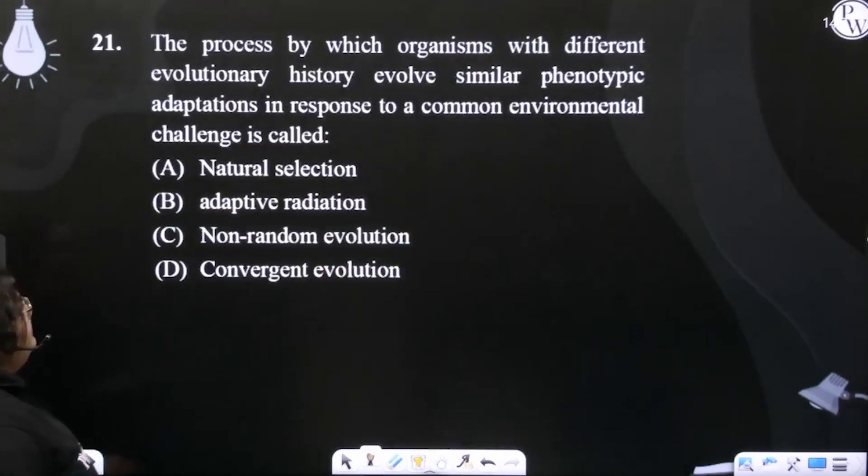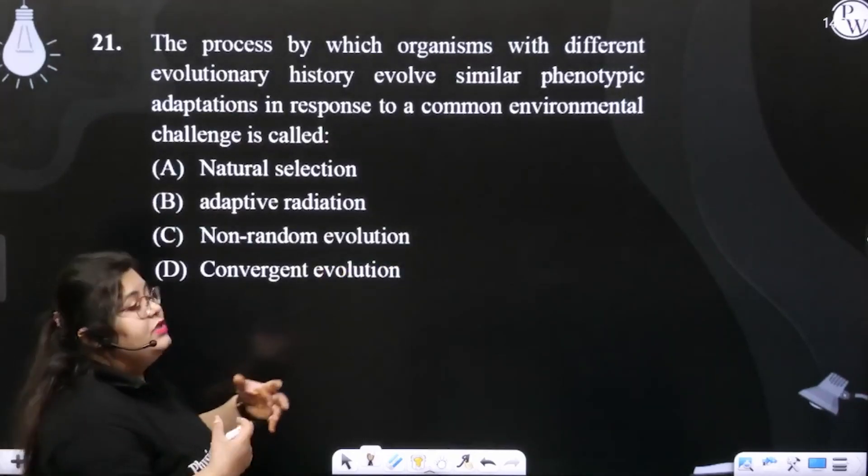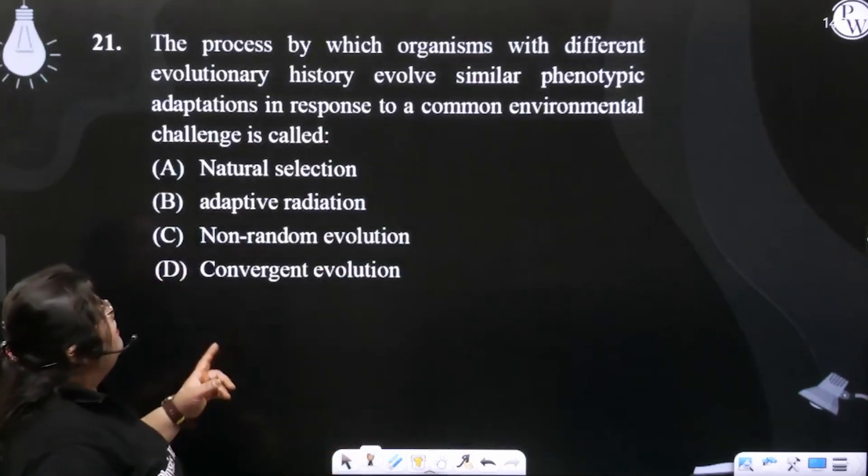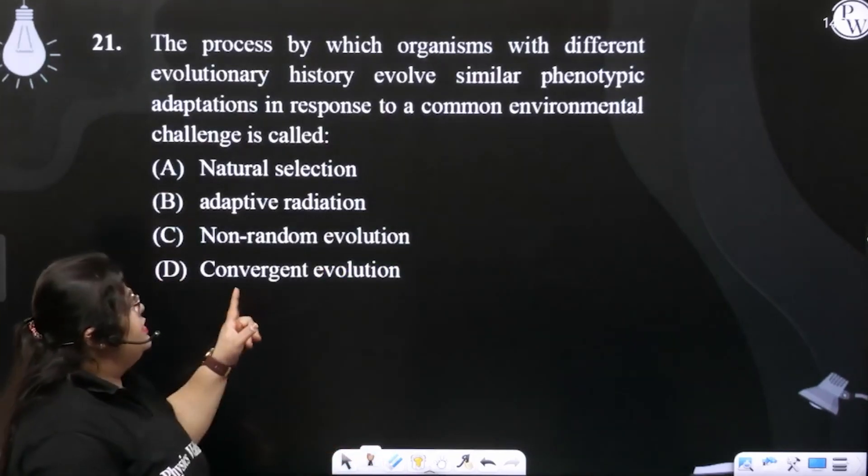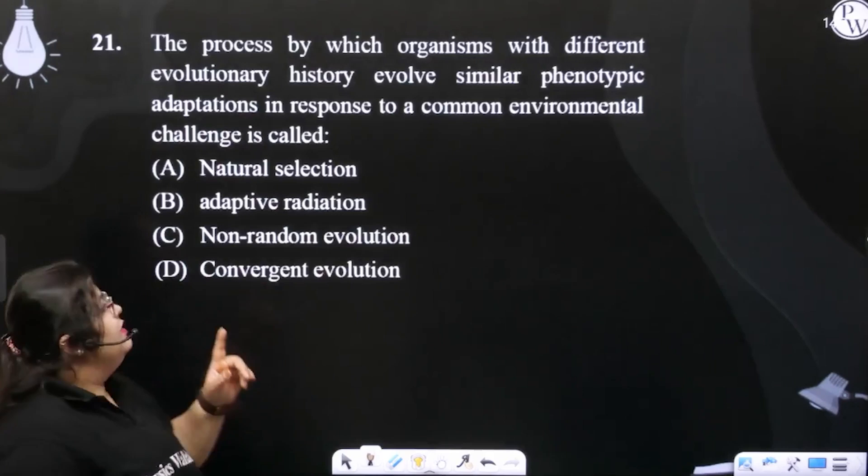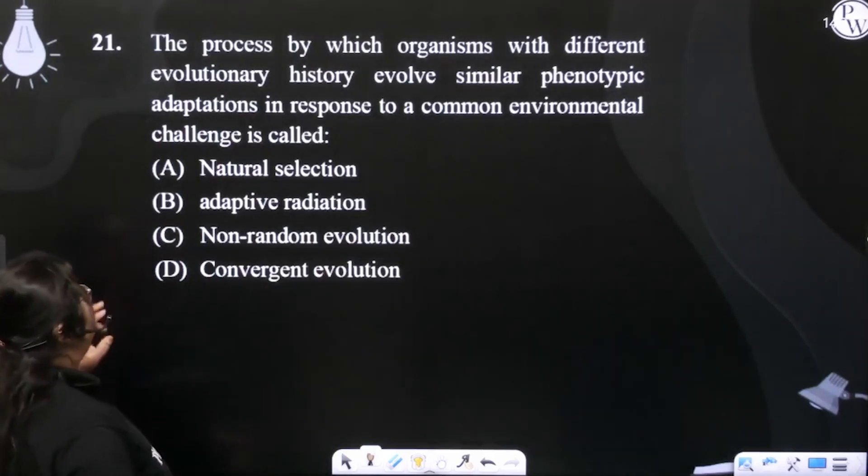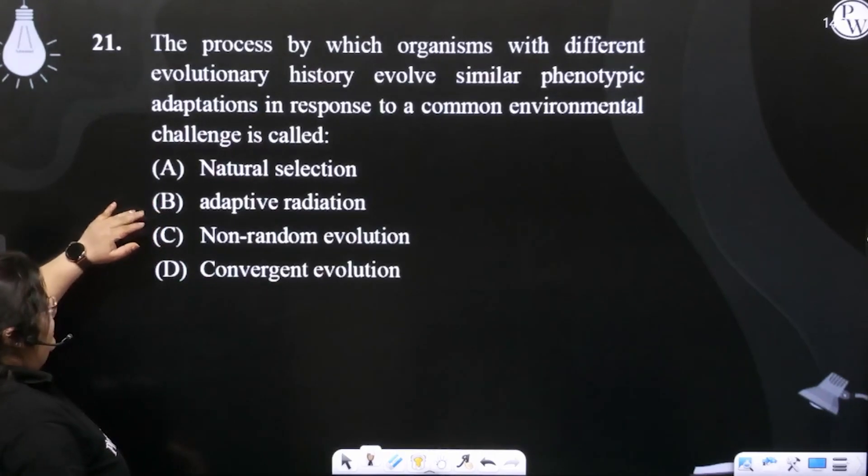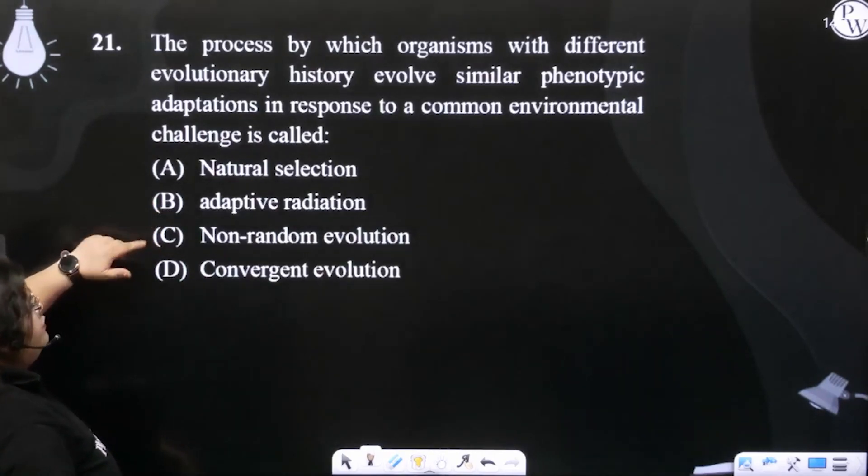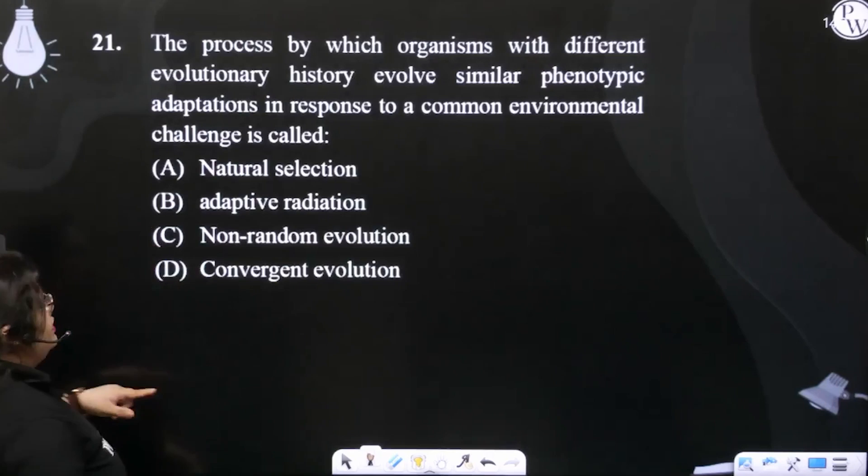This question asks about the process by which organisms with different evolutionary history evolved similar phenotypic adaptations in response to common environmental challenges. The options are: natural selection, adaptive radiation, convergent evolution, or non-random evolution.